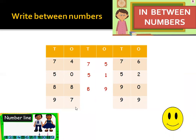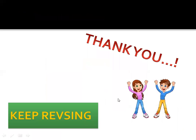And last is 97 and 99. In between 97 and 99, here comes 98. Good job, very good! Hope you all have understood what I told. Now keep revising. Thank you.